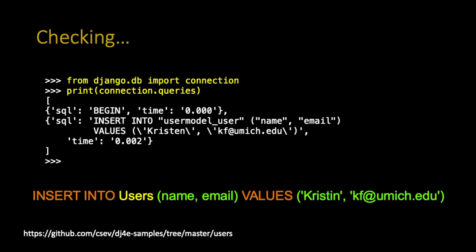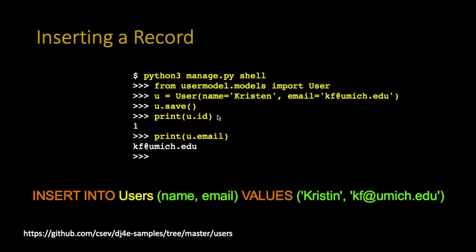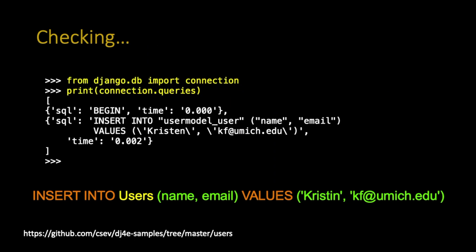You can dig into how the object relational mapping works. In the shell you can do: from django.db import connection, then ask connection.queries. That shows debug data — what it did, how it ran an insert statement. It's making up SQL for you for that insert — the save statement generates the INSERT SQL and you can see exactly what it's doing. You don't need to know INSERT INTO syntax yourself because the object relational model does it for you. This is equivalent to what we did before writing insert into users by hand.